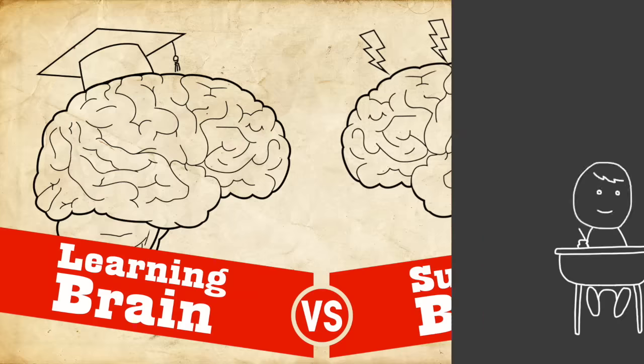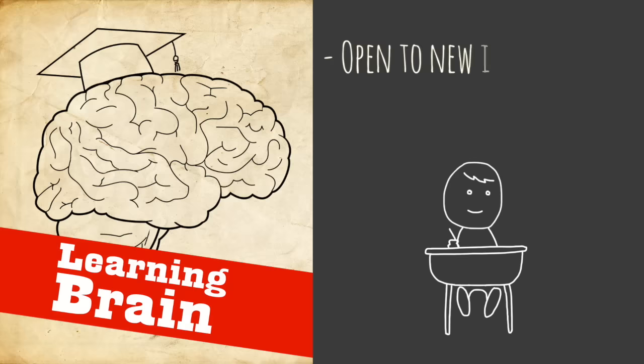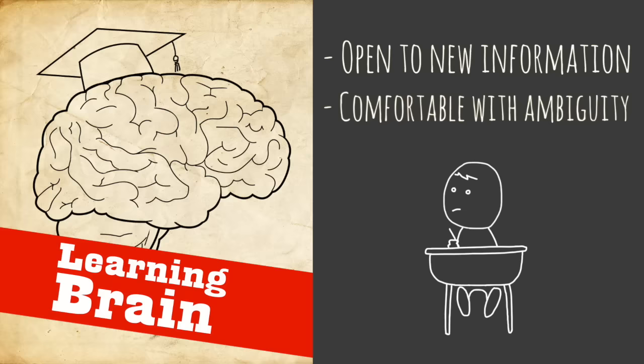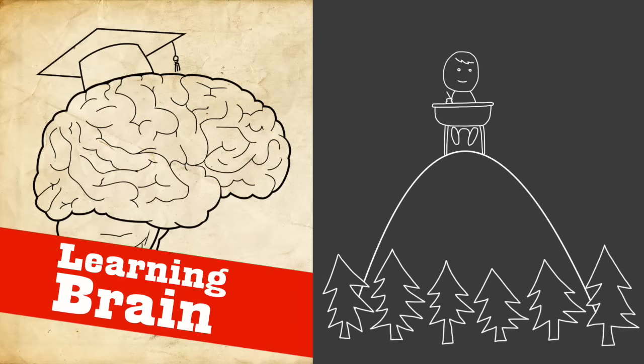So learning brain is this brain that's open to learning new information and it's completely okay with ambiguity and grays and vagueness and it sees the big picture. It pulls back and is on the balcony, can look over the forest and figure out what's going on.